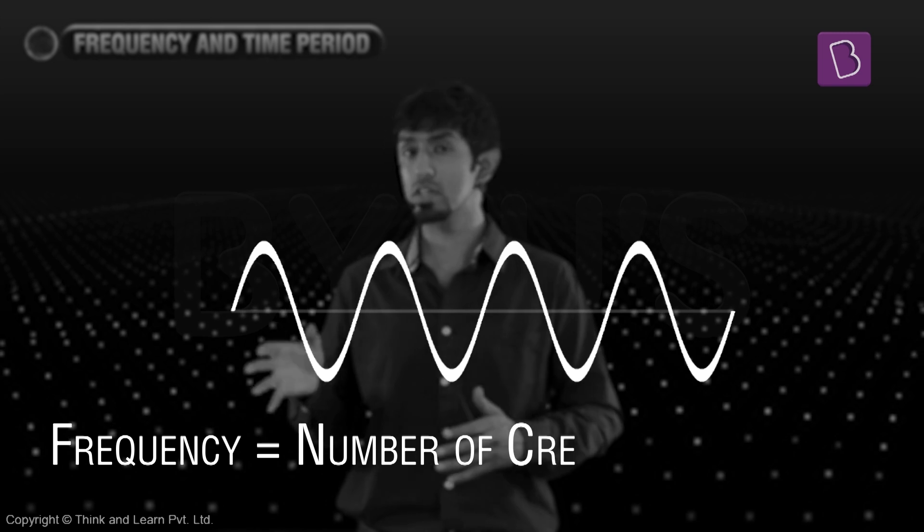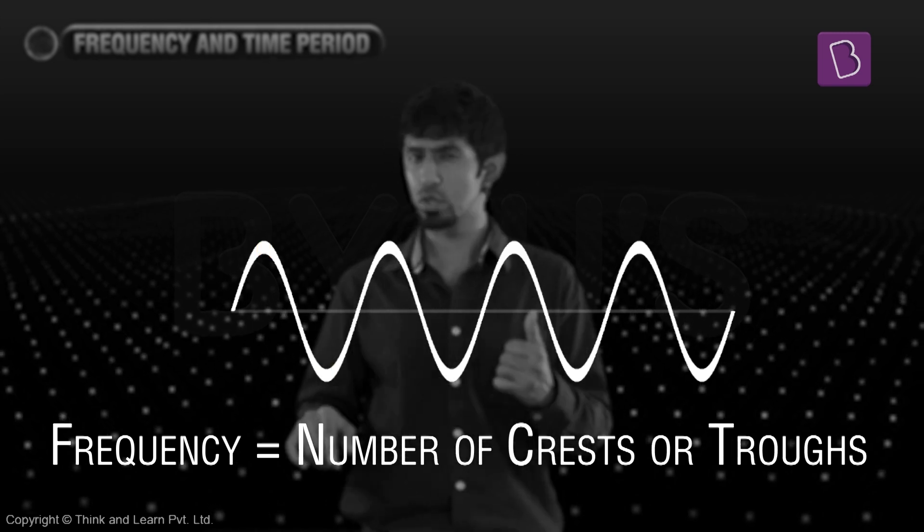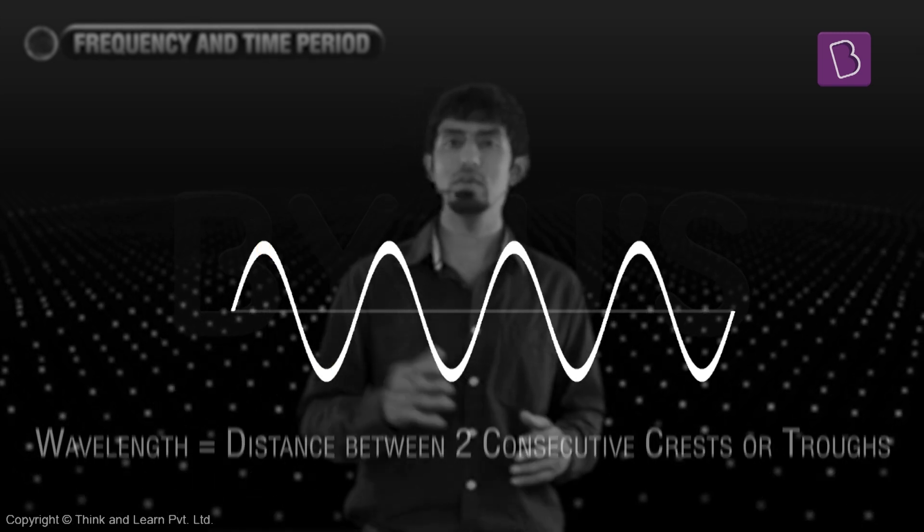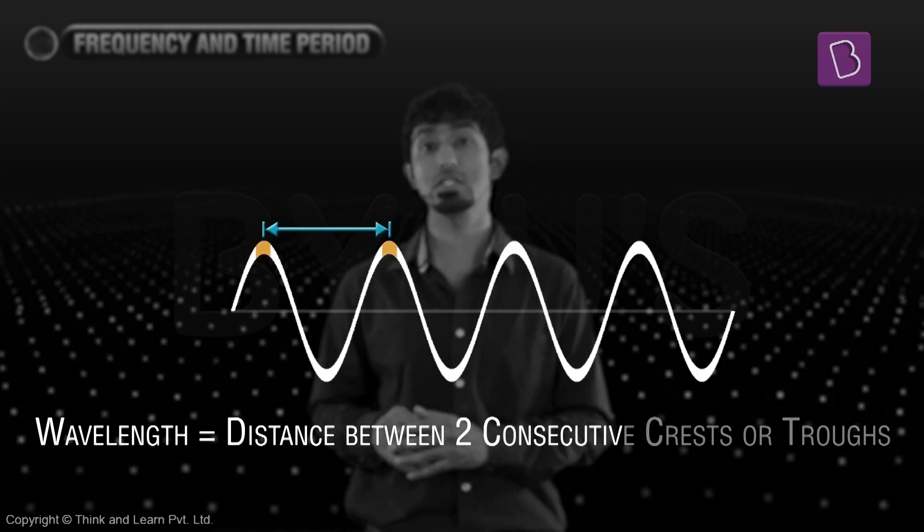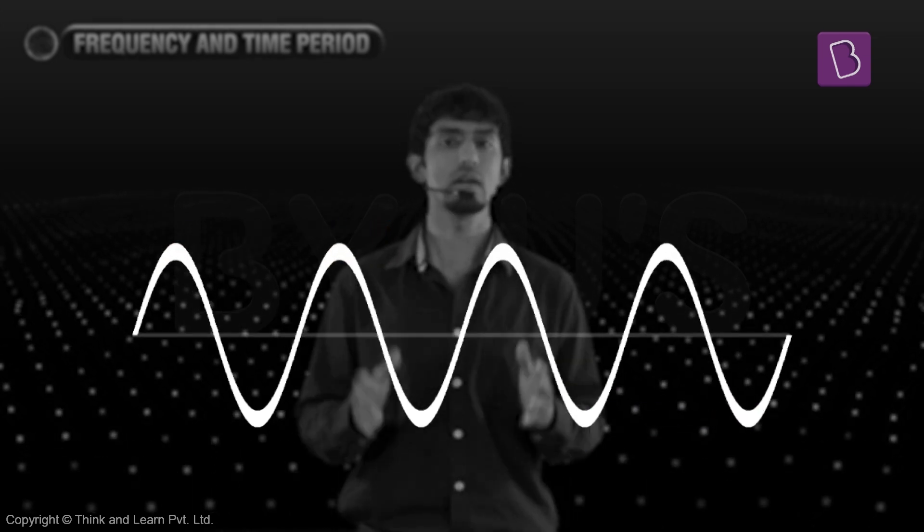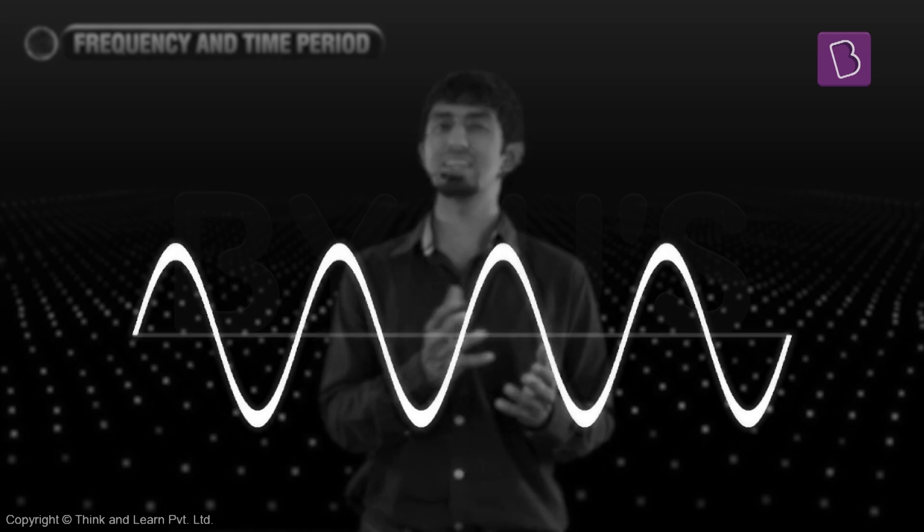So your frequency is the number of crests or troughs in a unit of time, usually a second, and wavelength is the distance between two crests or two troughs. Now you have to calculate something called time period.